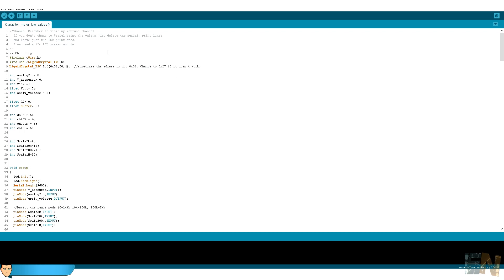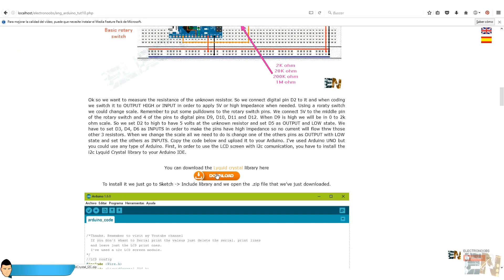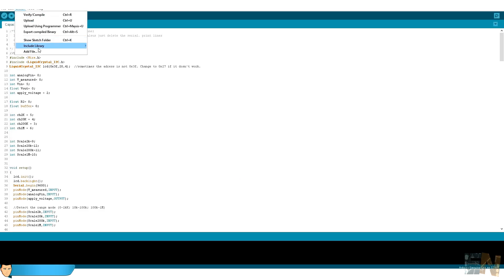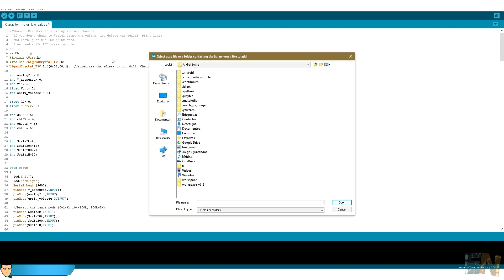All we need now is to upload this code. First we import the LCD library. In order to use an I2C communication with this LCD, you should install the I2C liquid crystal library. There is a link in the description for that. Download the zip file, then go to sketch, include library, and add zip library in order to install it.